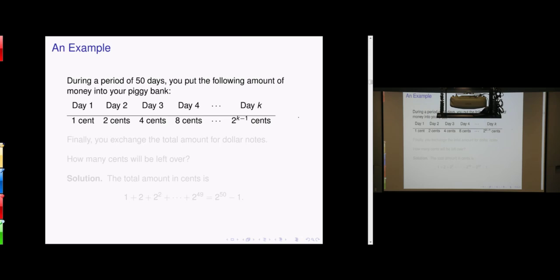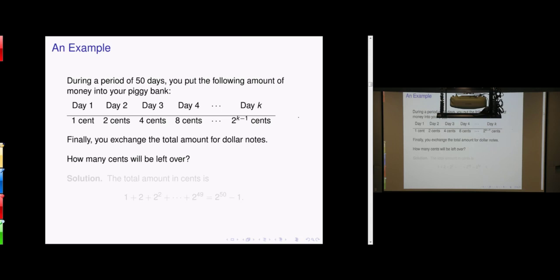Example: during a period of 50 days, you put the following amounts of money into your bank. Day one you put 1 cent, day two 2 cents, day three 4 cents — doubling every day geometrically. On day k you put 2 to the (k minus 1) cents. Suppose you do this for 50 days, then exchange your total amount for dollar notes. The question is: how many cents will be left over?